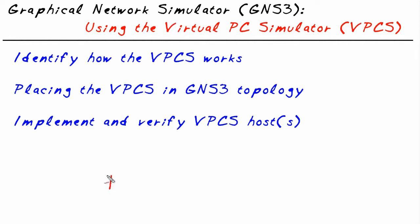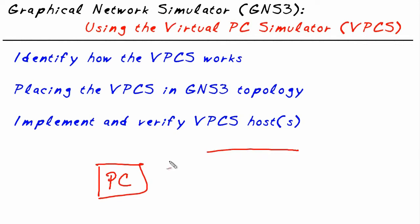Let's imagine that we have a PC — this personal computer. Let's say we want to give the world instructions on how to communicate with it. Dear Mr. World, if you want to talk to this PC for inbound connections, the only place I'm listening is on port 20,000 — UDP port 20,000, just as an example. So anything we want to send over to this PC, we send to the logical port of 20,000.